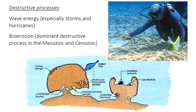The constructive processes of framework-building, sediment-baffling, and sediment-binding are always in a race against destructive processes. Reefs are primarily shallow water features, so wave energy — especially large storms like hurricanes — can damage the reef. Bioerosion, the destructive activities of boring and eroding organisms, has become an increasingly important destructive process in the Mesozoic and Cenozoic. There can also be a feedback between bioerosion and wave energy, where bioerosion weakens the reef, making it more susceptible to physical wave breakage.